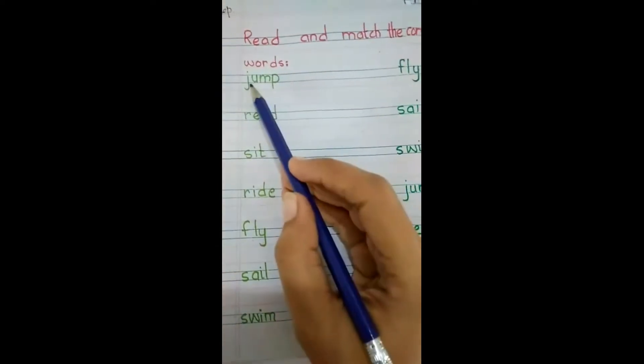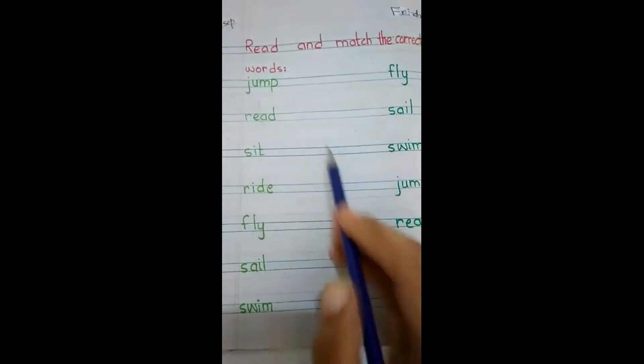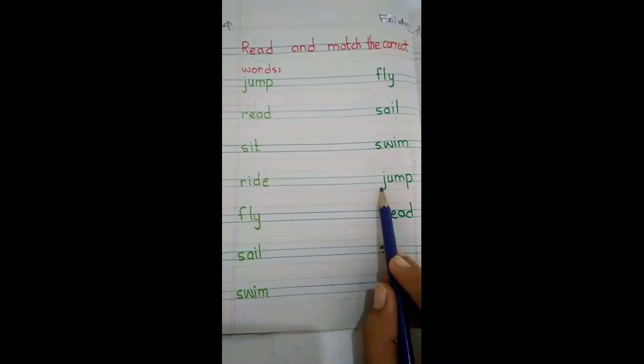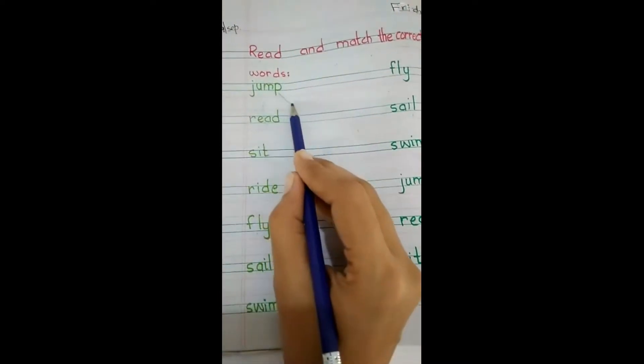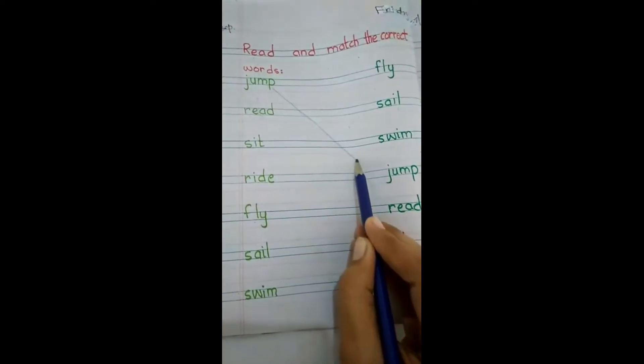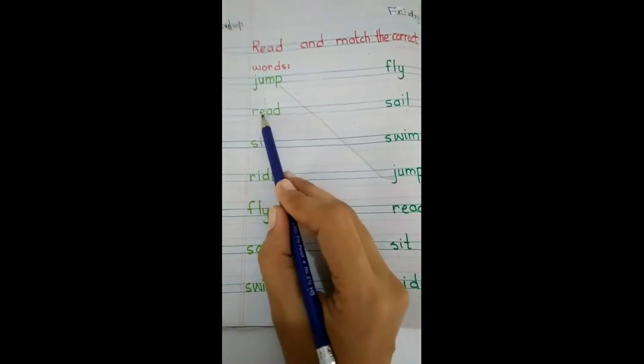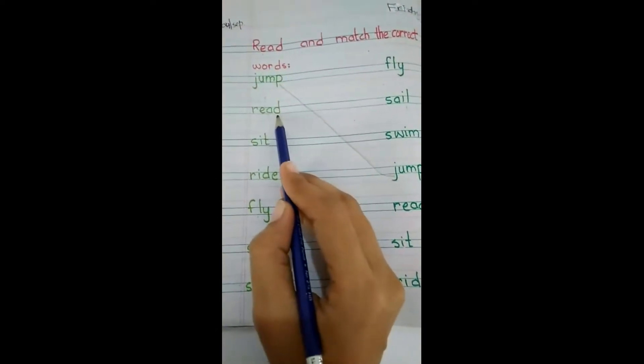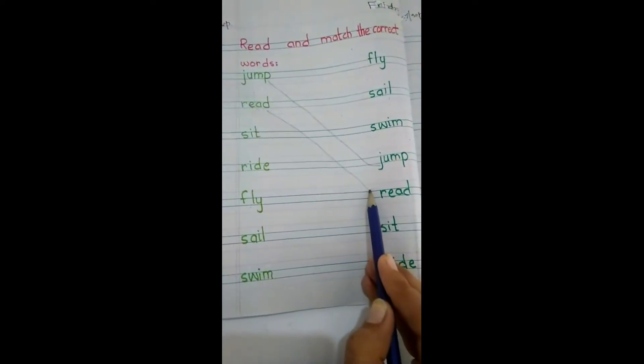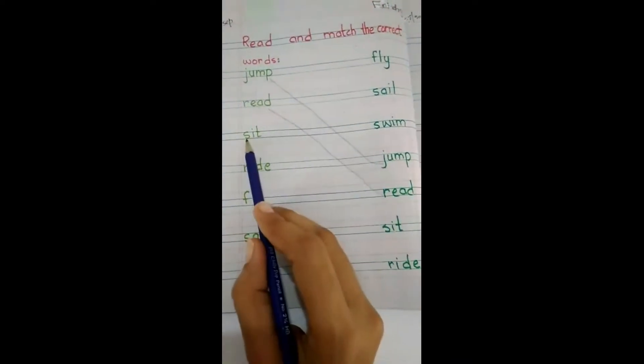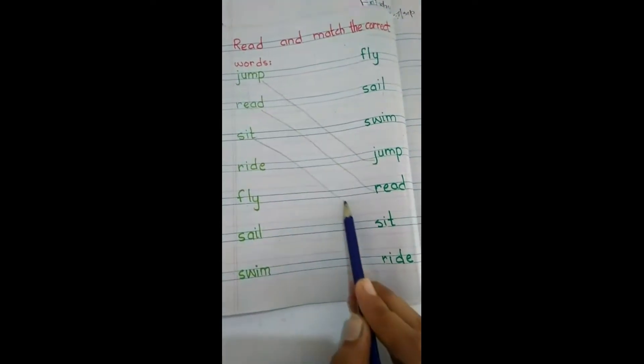First word is jump J-U-M-P jump. Find out the correct word, this is also written jump so we will match it like this. Read R-E-A-D read, match with correct word read. Sit S-I-T sit.